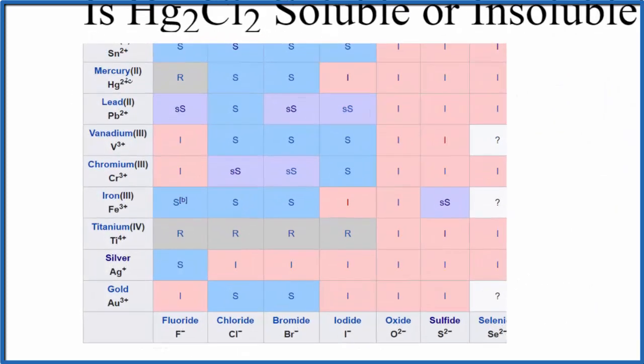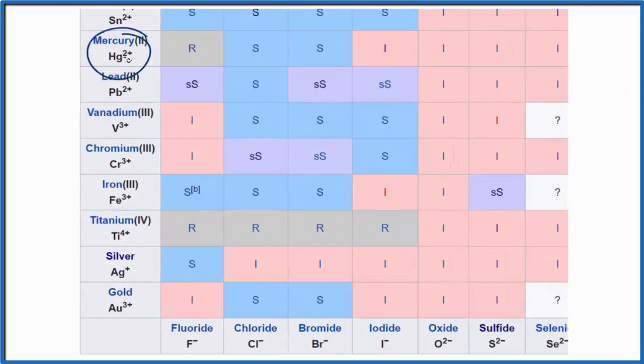So we find mercury 2, that's that Hg2+. And then we're looking for chloride, that's down here. So we go up and over S. So HgCl2, mercury 2 chloride, is soluble.